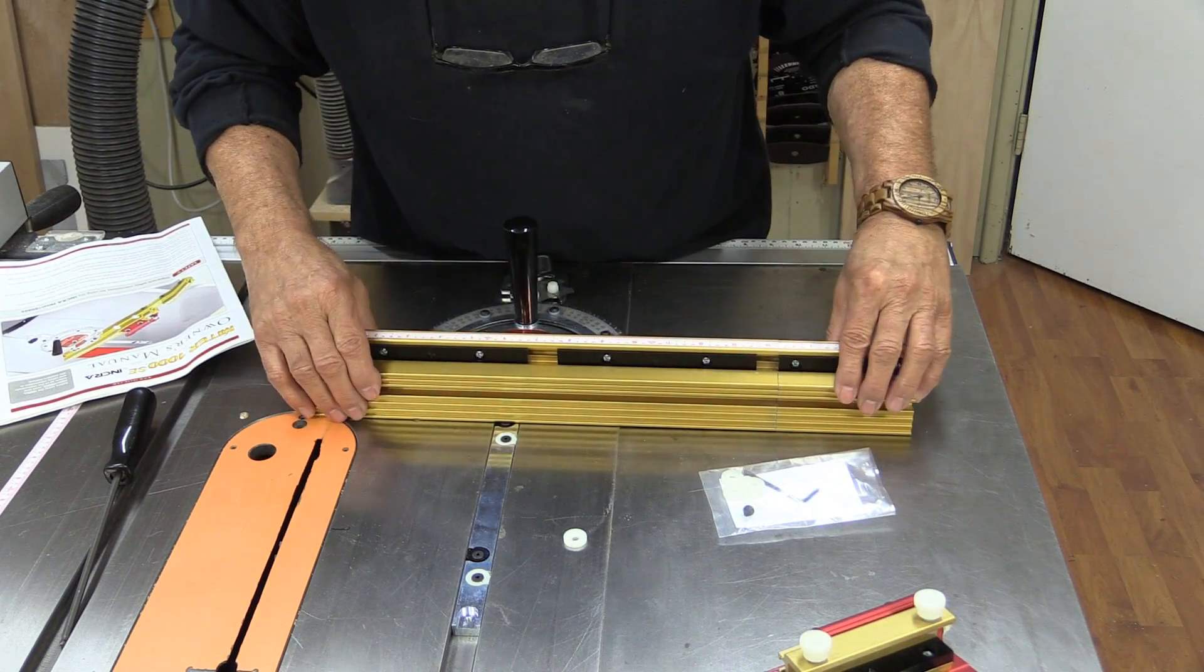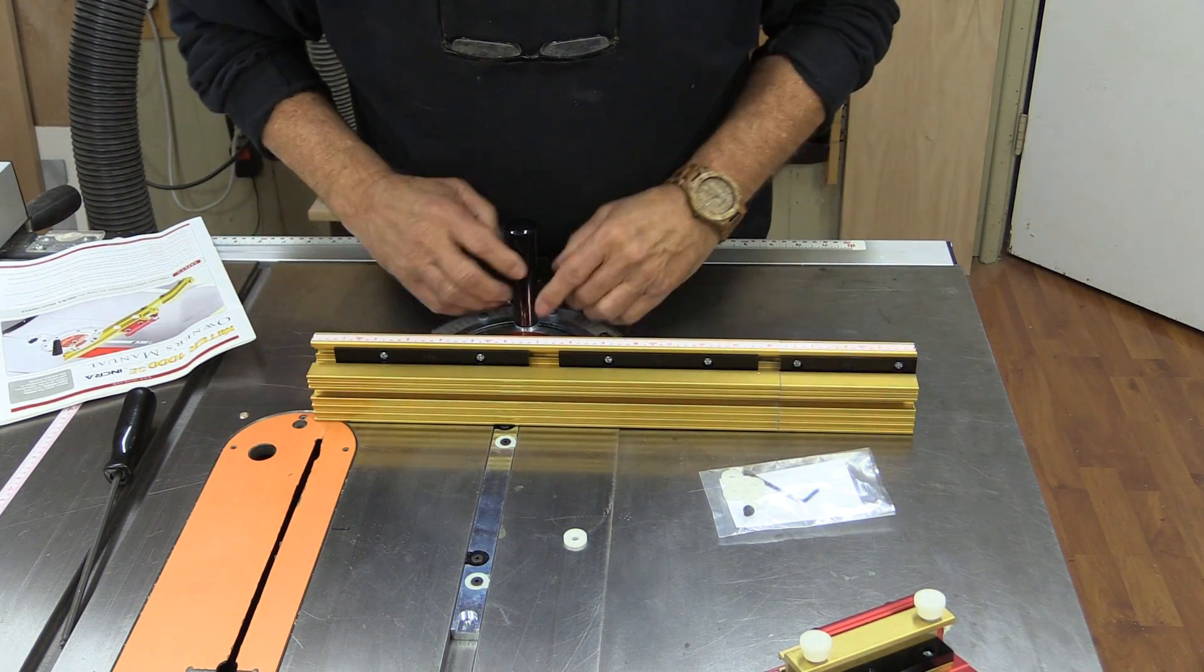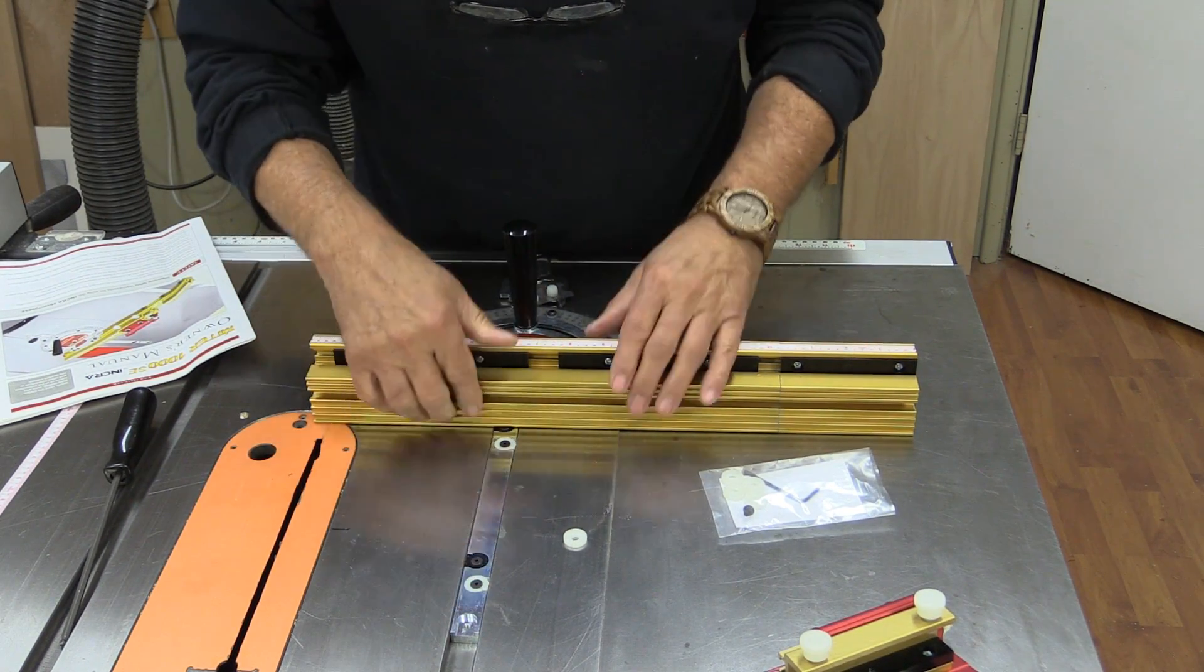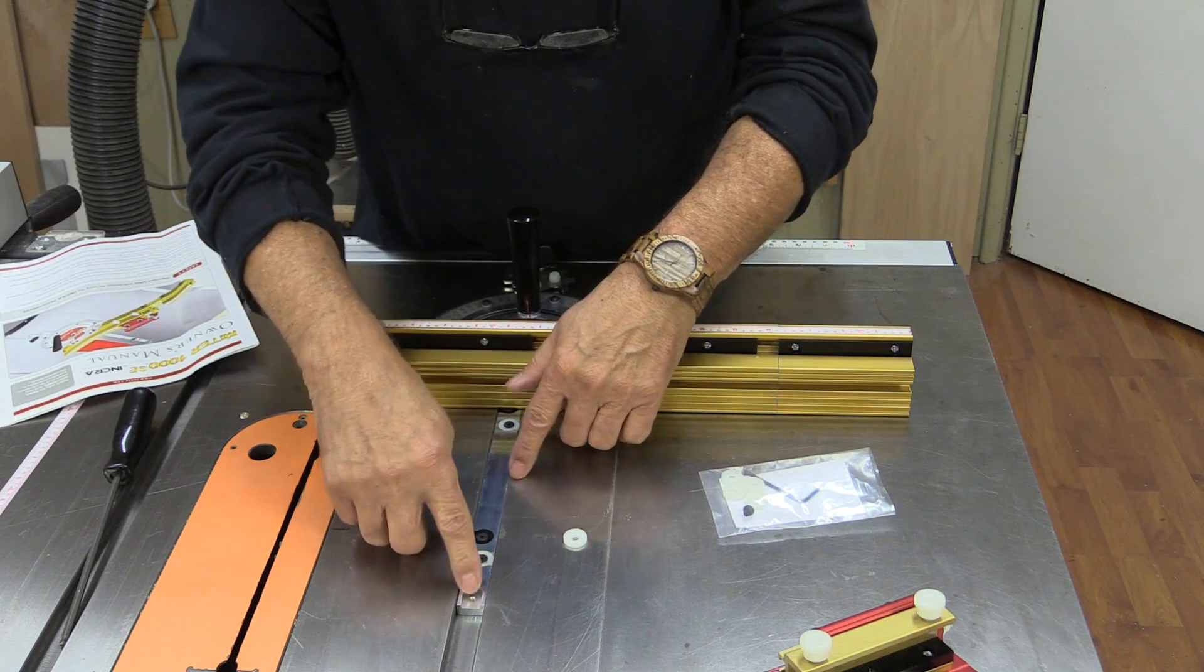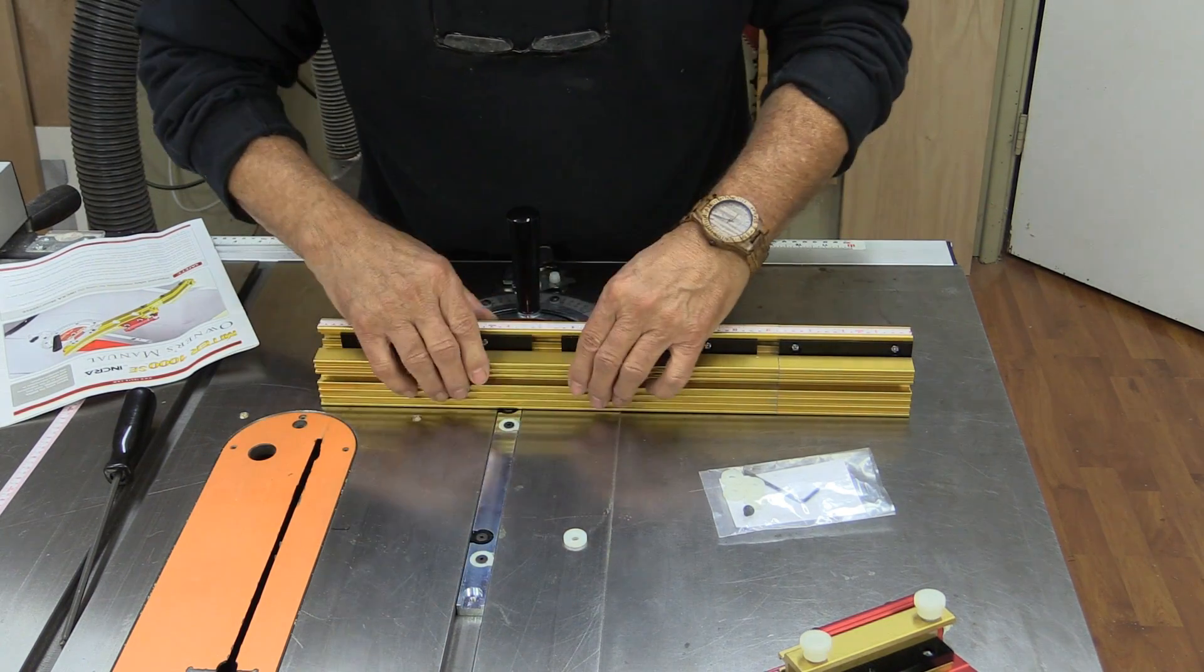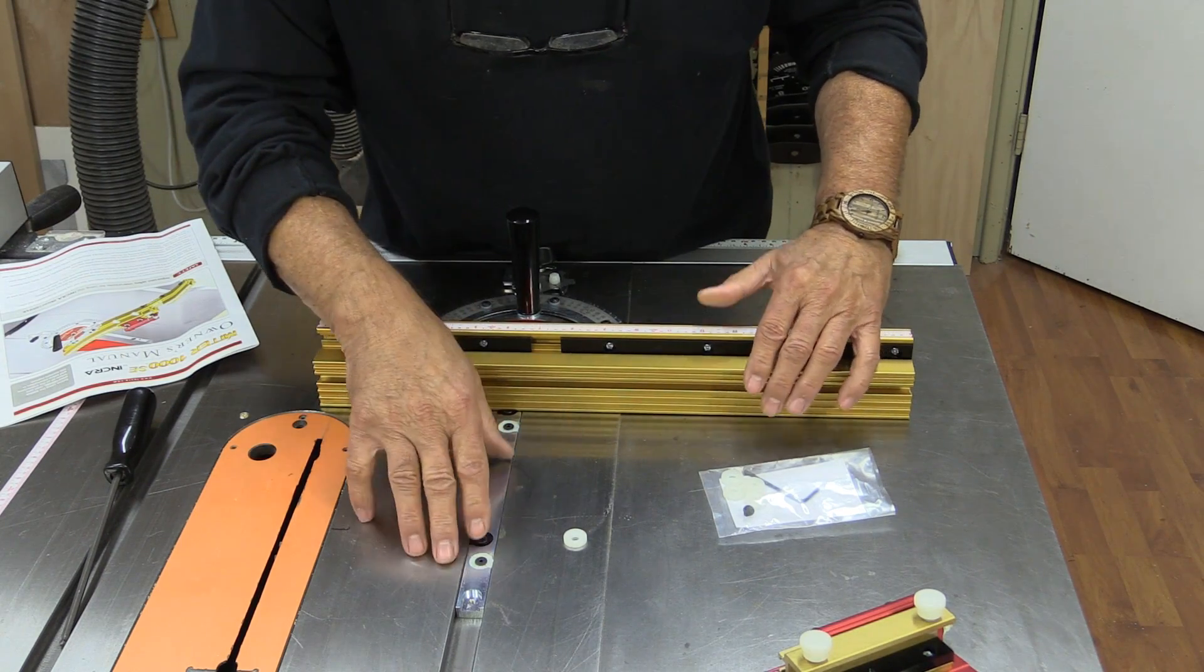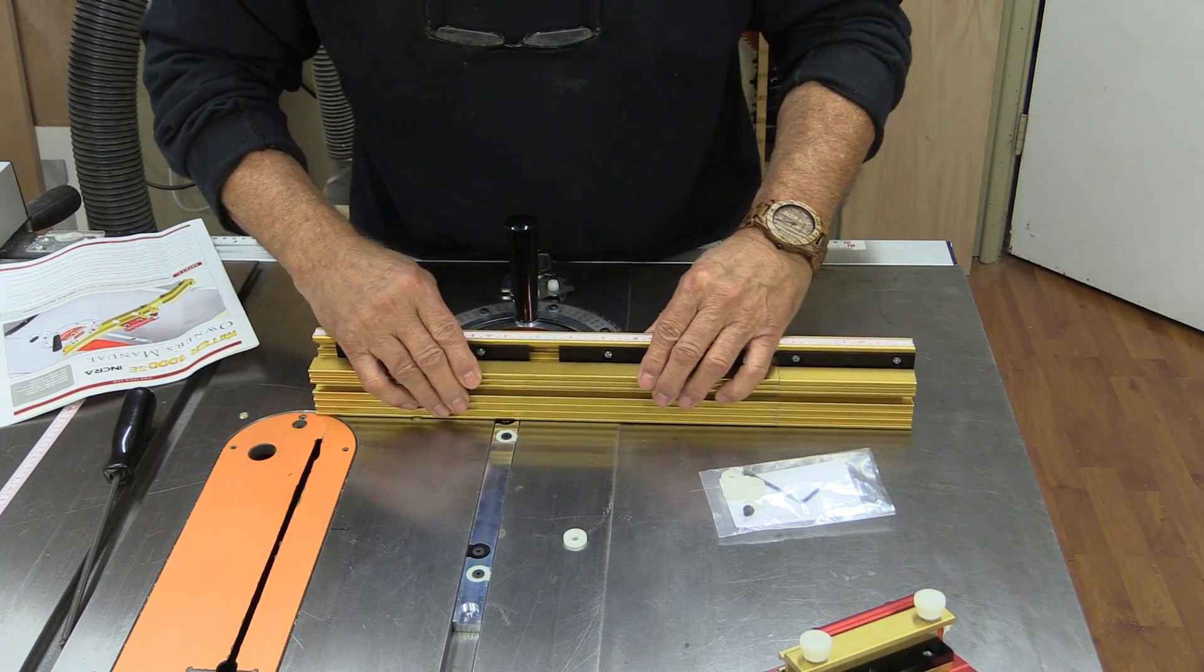The first thing that we need to do is make sure that fence is not moving back and forth in there. We can't get an accurate enough cut if this bar is moving back and forth in the slot.